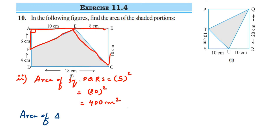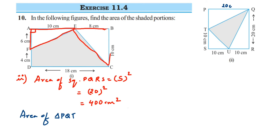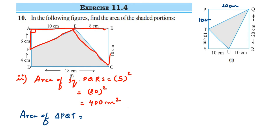Now we find the area of triangle PQT. The figure doesn't directly give all dimensions, but since all sides of the square are equal, PQ equals 20. The whole side is 20 centimeters and the given portion is 10, so PT equals 10 centimeters. Area of triangle PQT equals half into base into height: half × 10 × 20. Cancelling 2 and 20 gives 10, so 10 × 10 = 100 centimeter square.